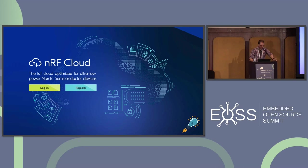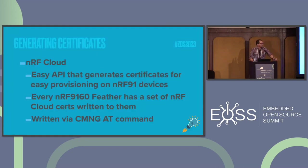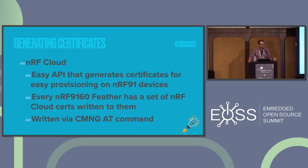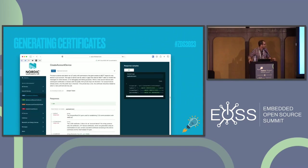On the cloud side, Nordic has an easy way of generating certificates used for provisioning the NRF9160 or any other chips connecting to their cloud — they have that API. For this device, every time I test and set it up, every single one gets a set of certificates written to it using the key management AT commands, which write the certs to the secure key store on the device. There's really no way to get that information back off — it's secure enough unless you want to physically tamper with the device. Here's the API for getting that information — you might notice the payload is very similar to the JSON we saw before, because it is.